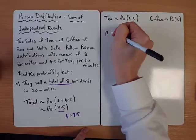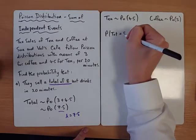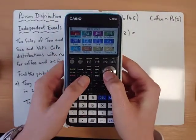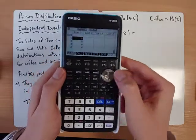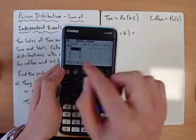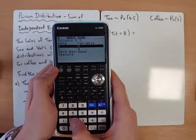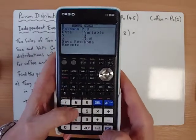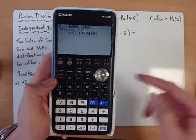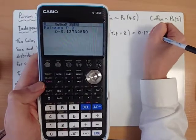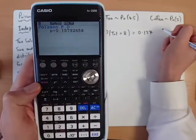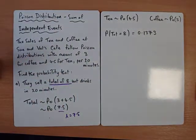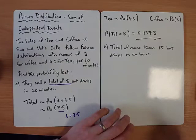So we want a total equal to 8. Let's go menu, statistics, distribution, Poisson, F1 because it's equal to. Total equal to 8, the mean for this question is 7.5. That would give us 0.13732, so 0.1373.